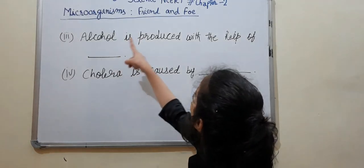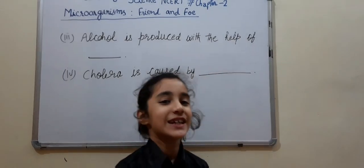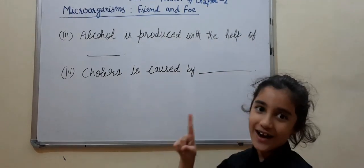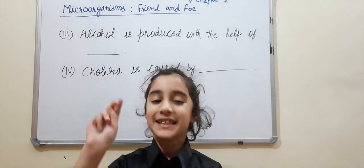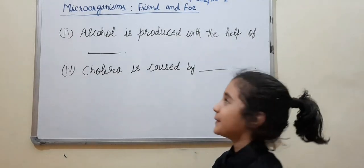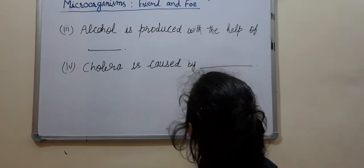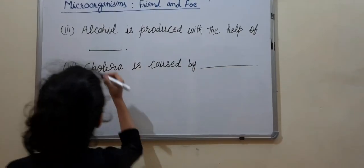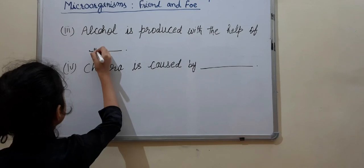Alcohol is produced with the help of dash. Your time starts now. 1, 2, 3, your time's up. The correct answer is yeast.